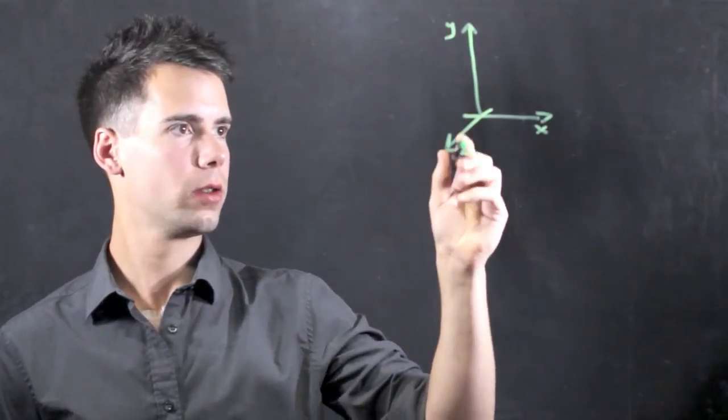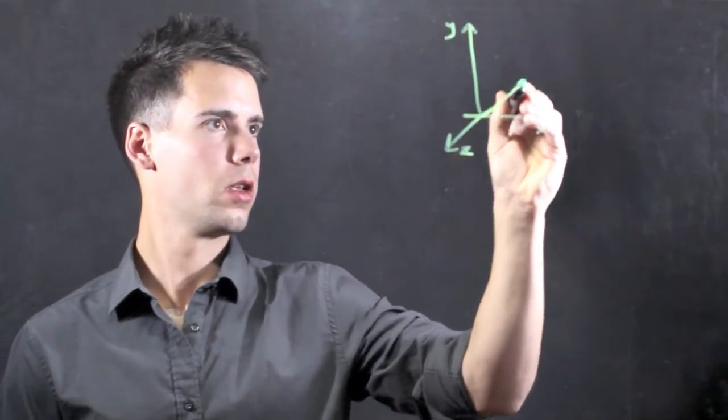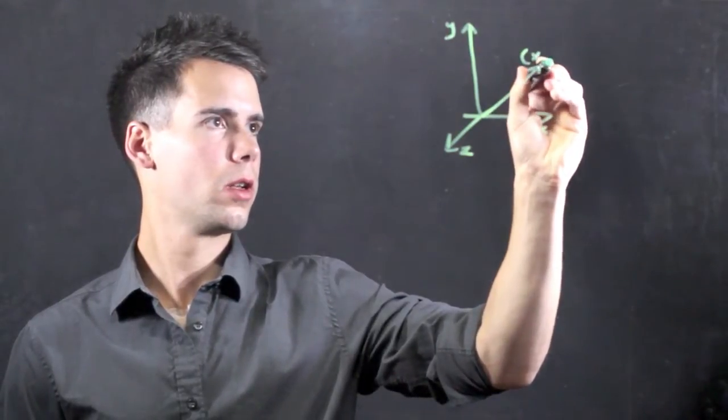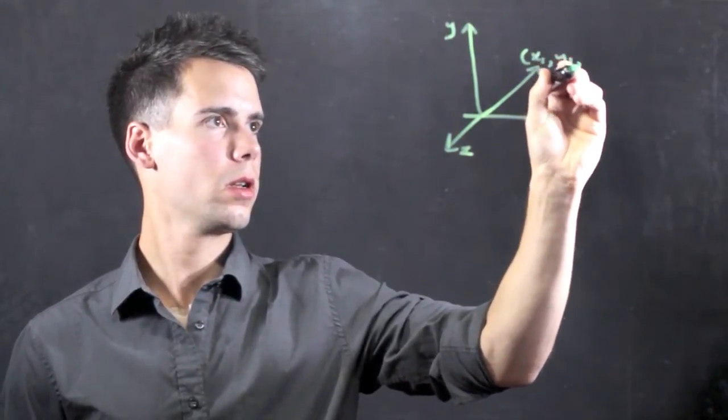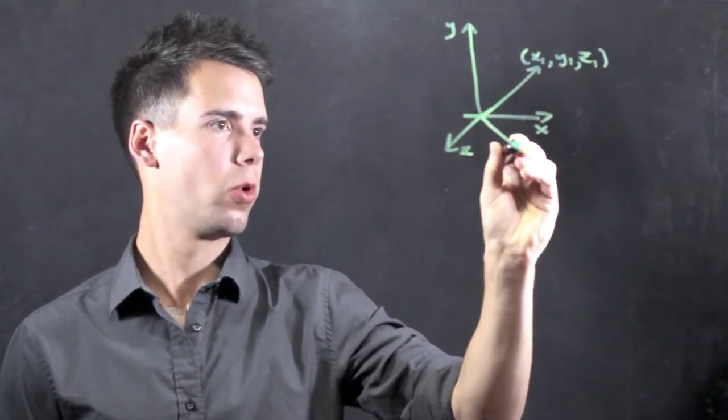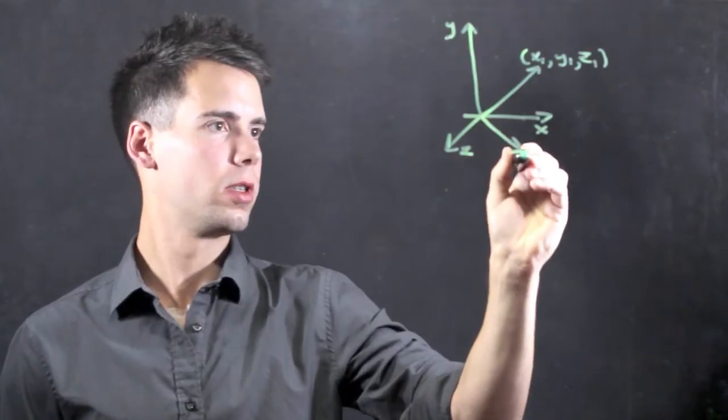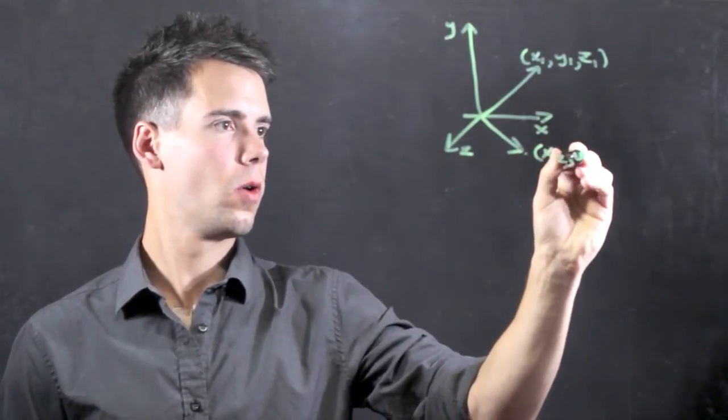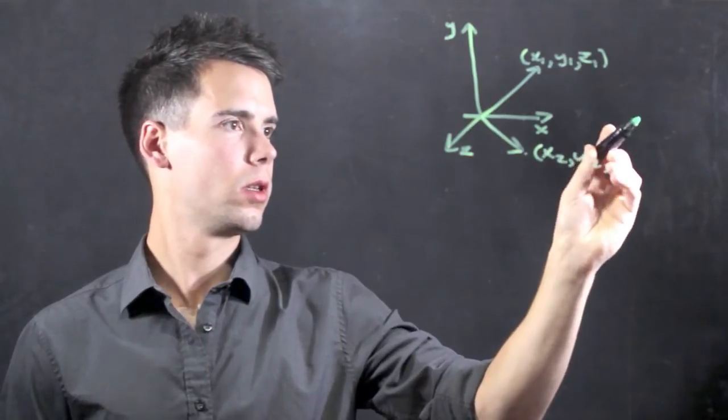Now we have two points. We could say one is located at (x1, y1, z1) and we have another point which is located at (x2, y2, z2).